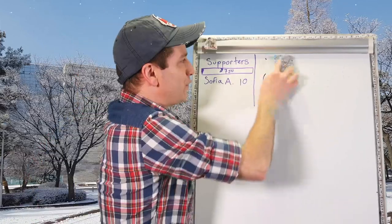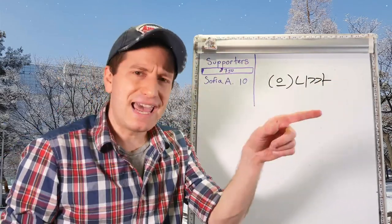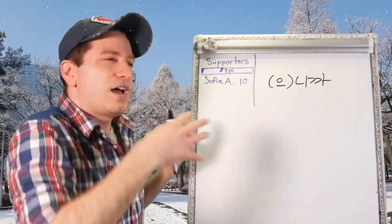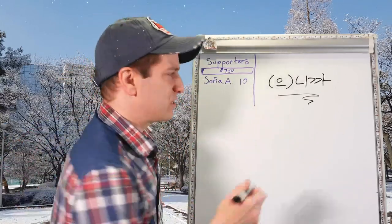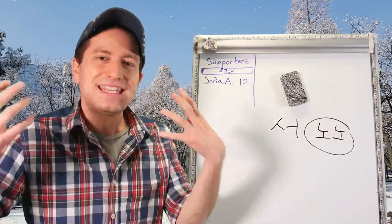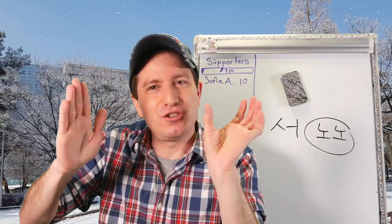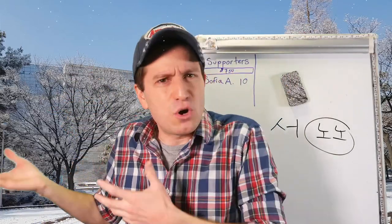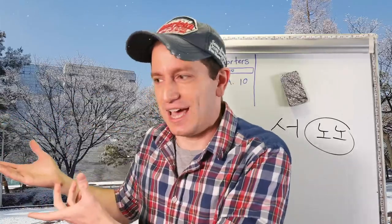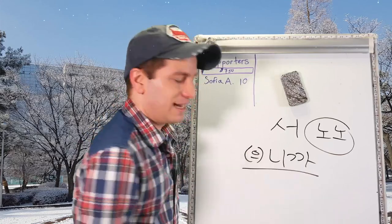If you already understand the 니까 form, this next part will make a lot of sense. The 니까 form can be used to say a command or suggestion because of something — for example, 'the weather is good, so let's go have a picnic.' Using commands or suggestions with the 서 form is a big no-no. It doesn't make sense because there's no cause and effect in a command. You cannot use the 서 form with commands or suggestions. Instead use the 니까 form, since the 니까 ending doesn't have that restriction.